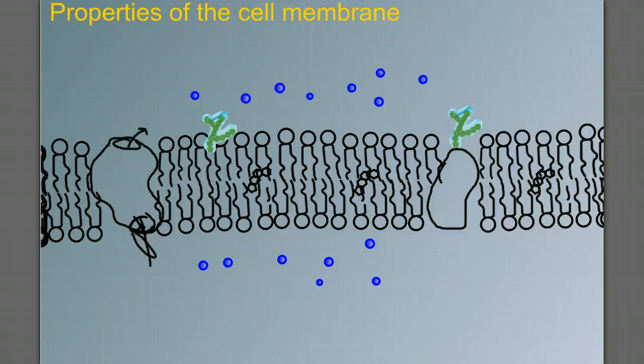Now let's talk about the properties of the cell membrane. We already said that it's a mosaic. That's one of the properties. And it's fluid. That's another one of the properties. However, probably the most important property is that the cell membrane is selectively permeable.